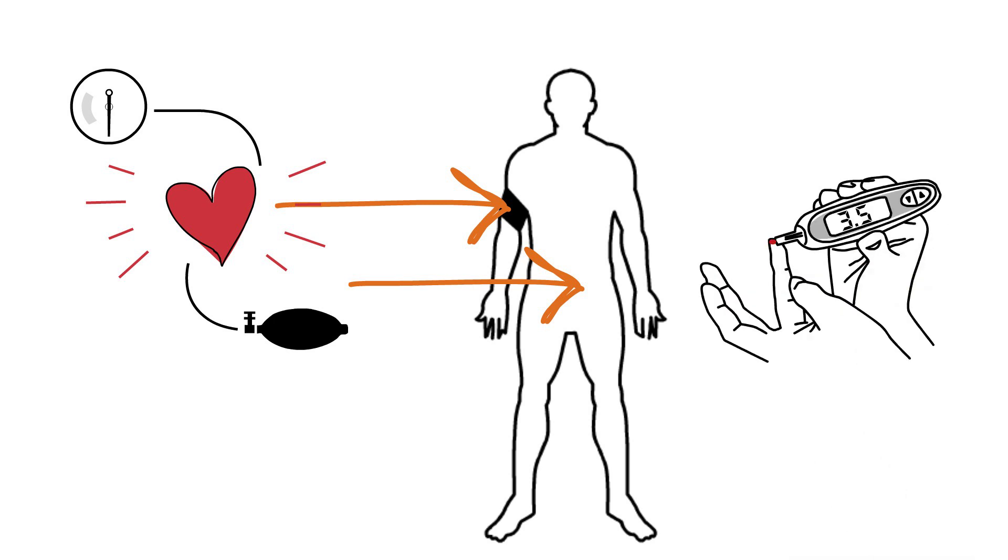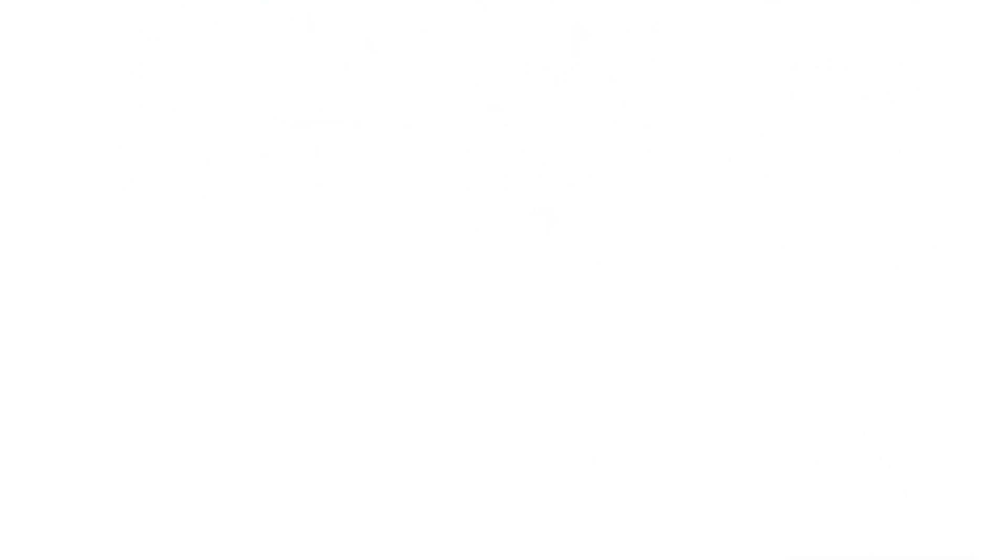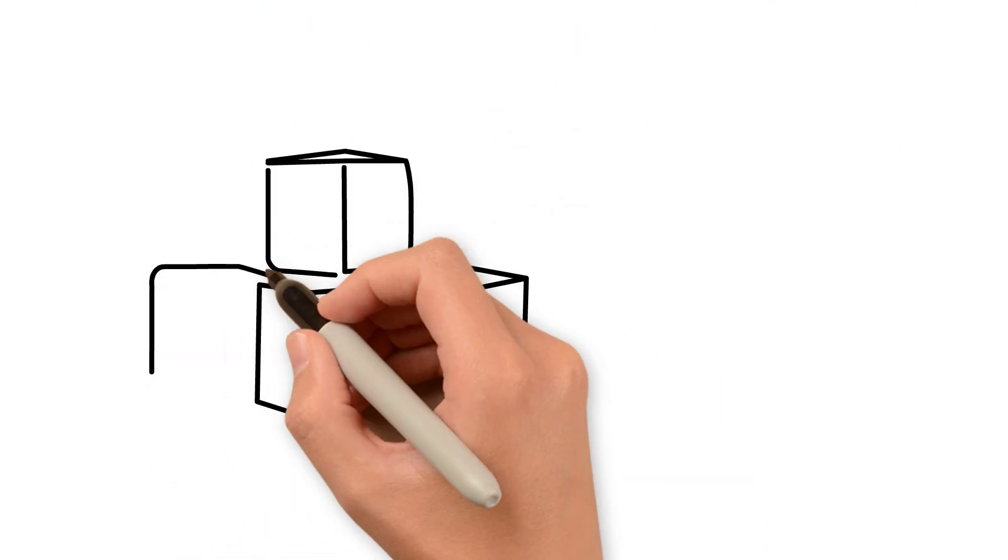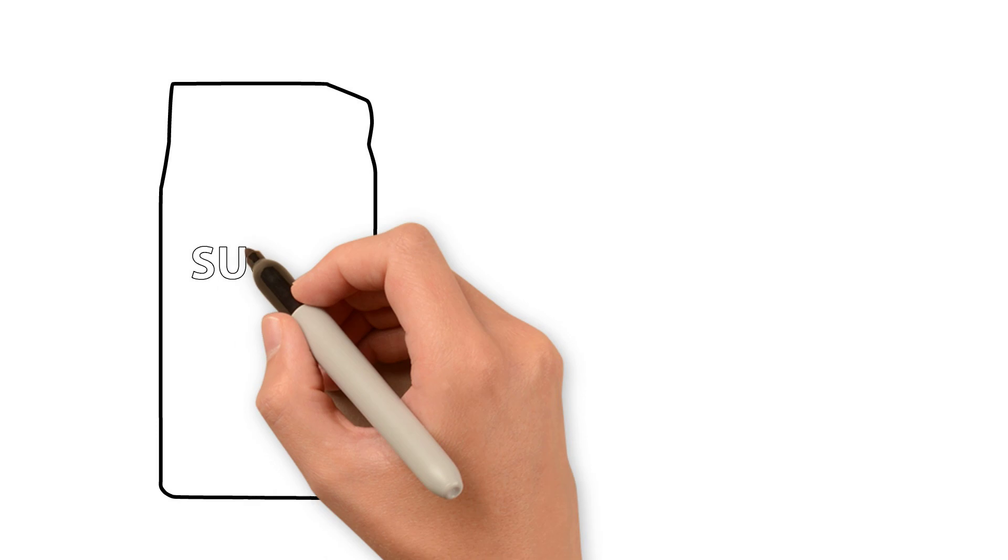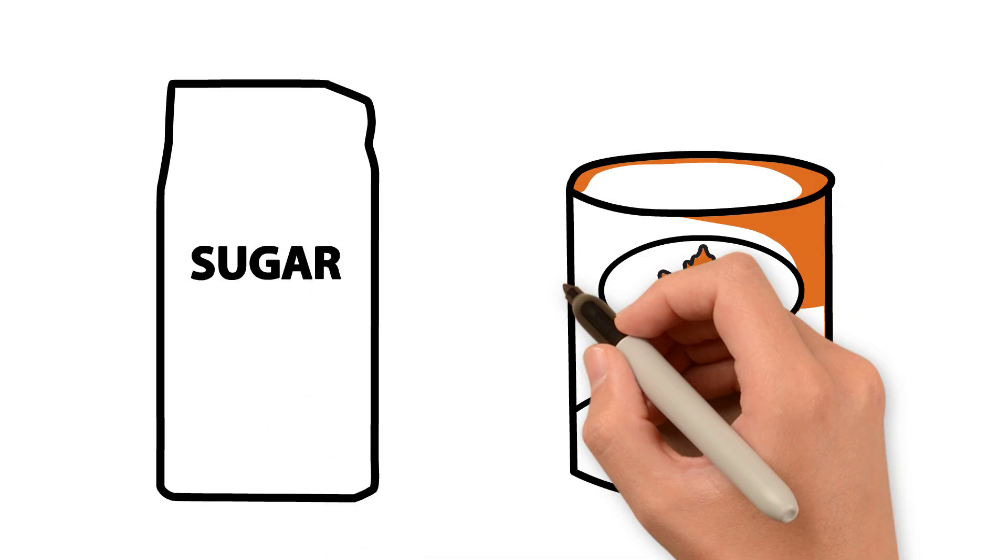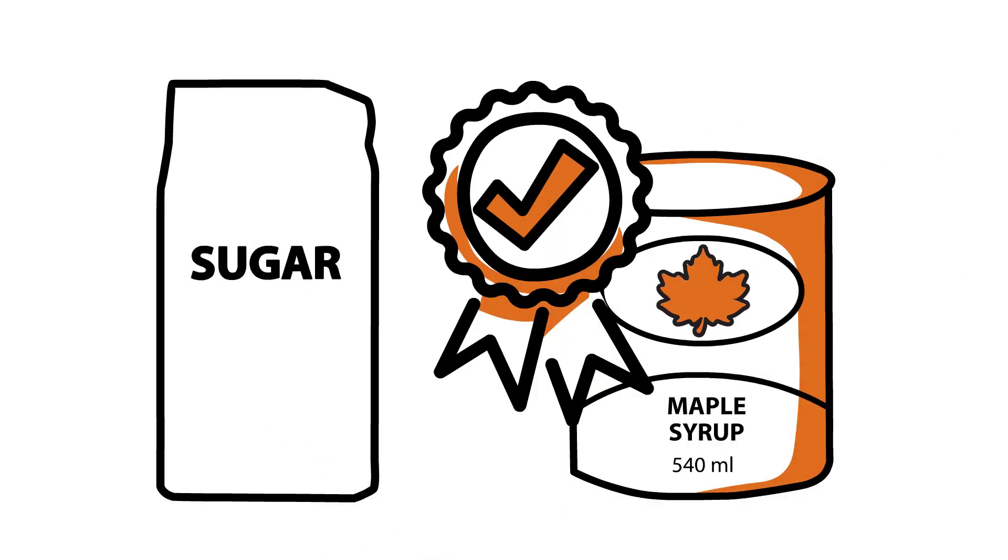The World Health Organization recommends that added sugars should not exceed 10% of overall daily energy intake. But when you choose a sweetener and use it in moderation, it's good to know that maple syrup is healthier than white sugar or other refined sweetening agents.